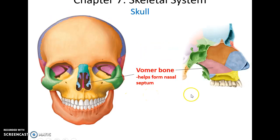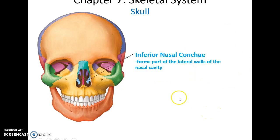The vomer is a triangular bone that helps form the nasal septum. The two lateral bones of the nasal cavity are called the inferior nasal conchi.